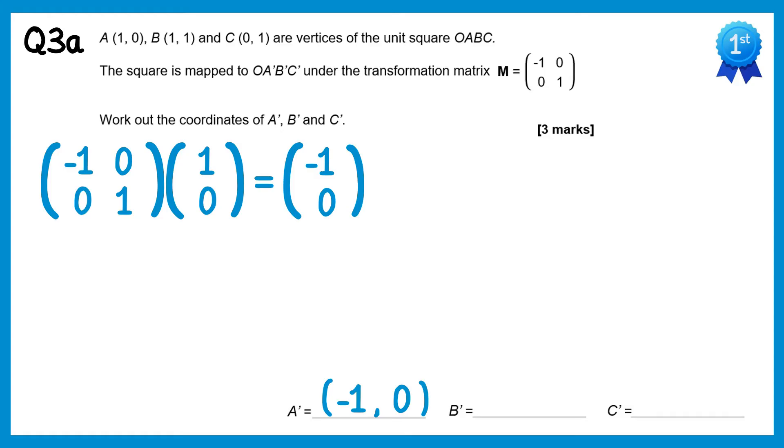Now we'll do B. So matrix M, the point B. We do (-1,0) with (1,1), which gives you -1, and (0,1) with (1,1), gives you 1. So that's the image of B, B dashed.